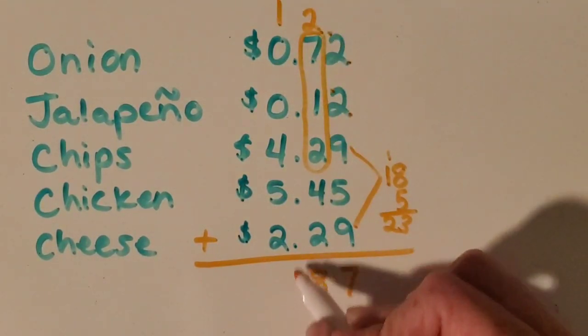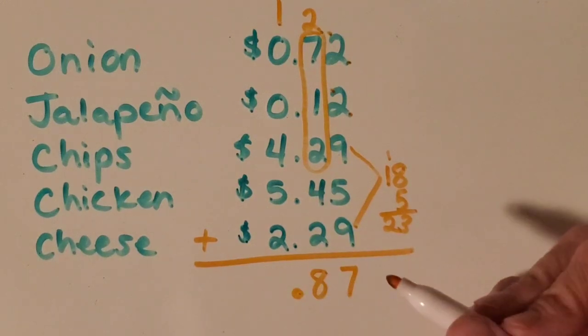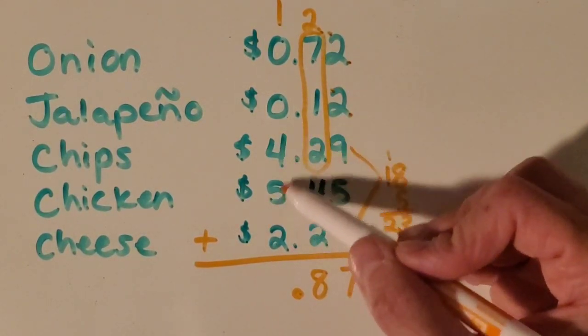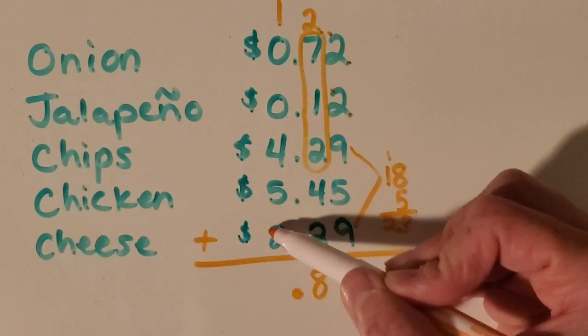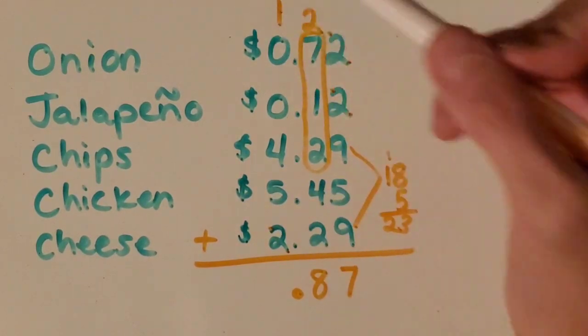Okay, I'm going to go ahead and bring down my decimal. Okay, then I'm going to count these up. I have 9, 4 plus 5 is 9, 10, 11, 12.